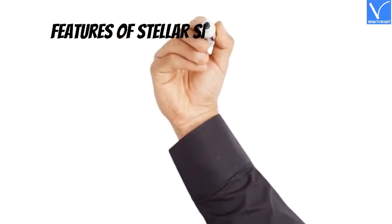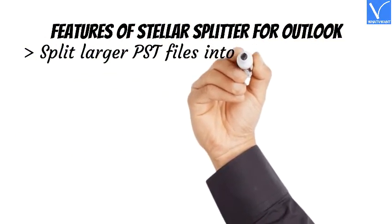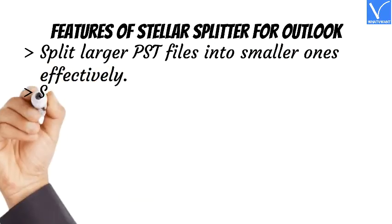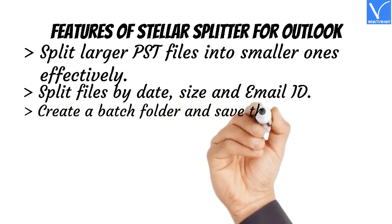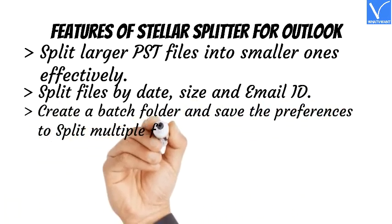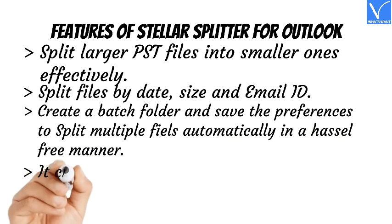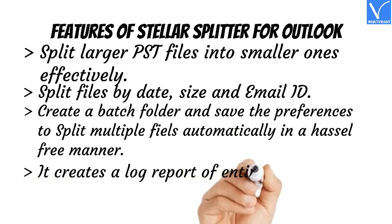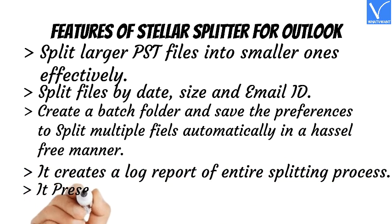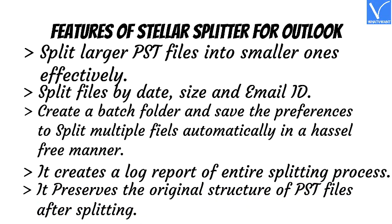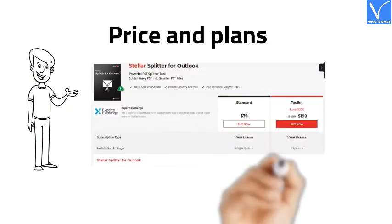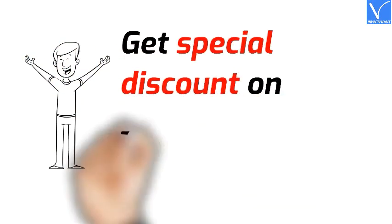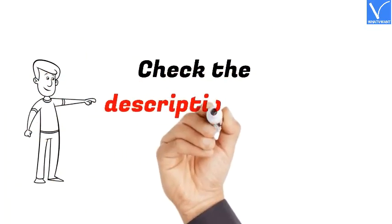Features of Stellar Splitter for Outlook: split larger PST files into smaller ones effectively; split files by date, size, and email ID; create a batch folder and save preferences to split multiple files automatically in a hassle-free manner; creates a log report of the entire splitting process; preserves the original structure of PST files after splitting. Our viewers get a special discount on Stellar Splitter for Outlook. Check the description for product and discount links.